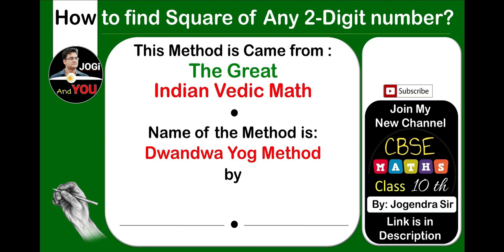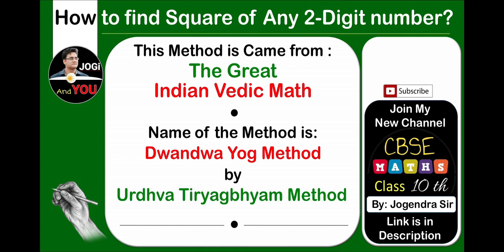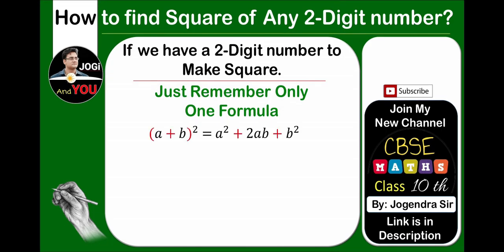This method came from the great Indian Vedic math. The name of this method is Dvanda Yoga method by Urdhva-Tiryagbhyam method. If we have a two-digit number to square, just remember only one formula: (a + b)² = a² + 2ab + b². In this formula, just remove all the positive signs. This new corrected formula is useful for our squaring.